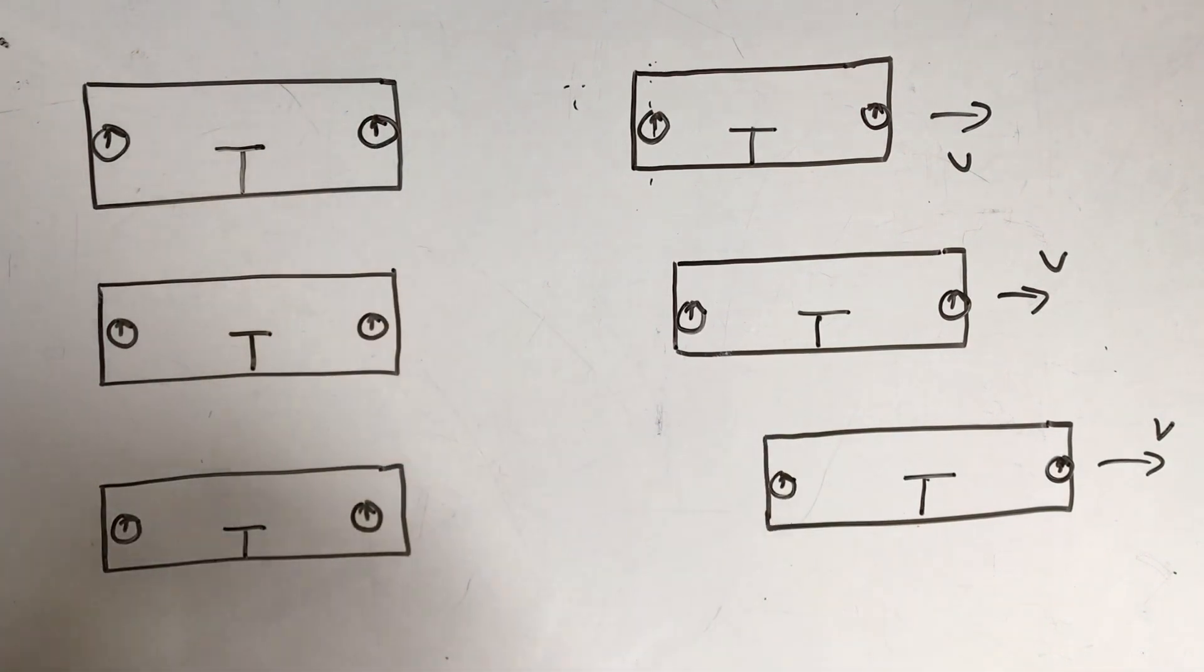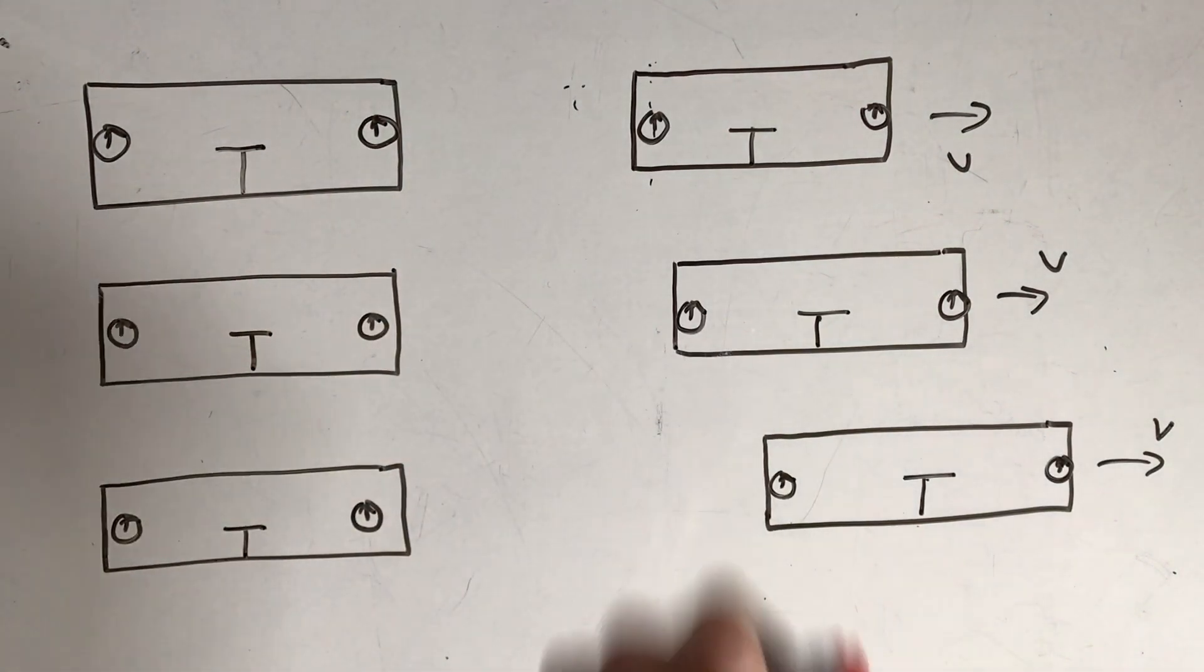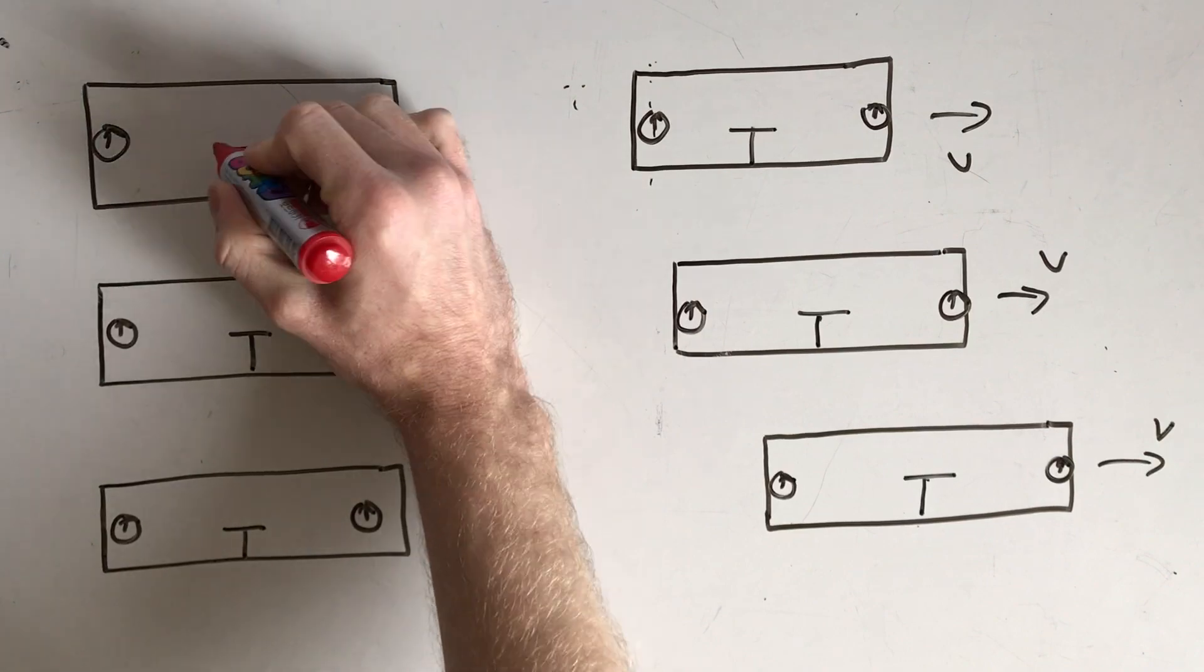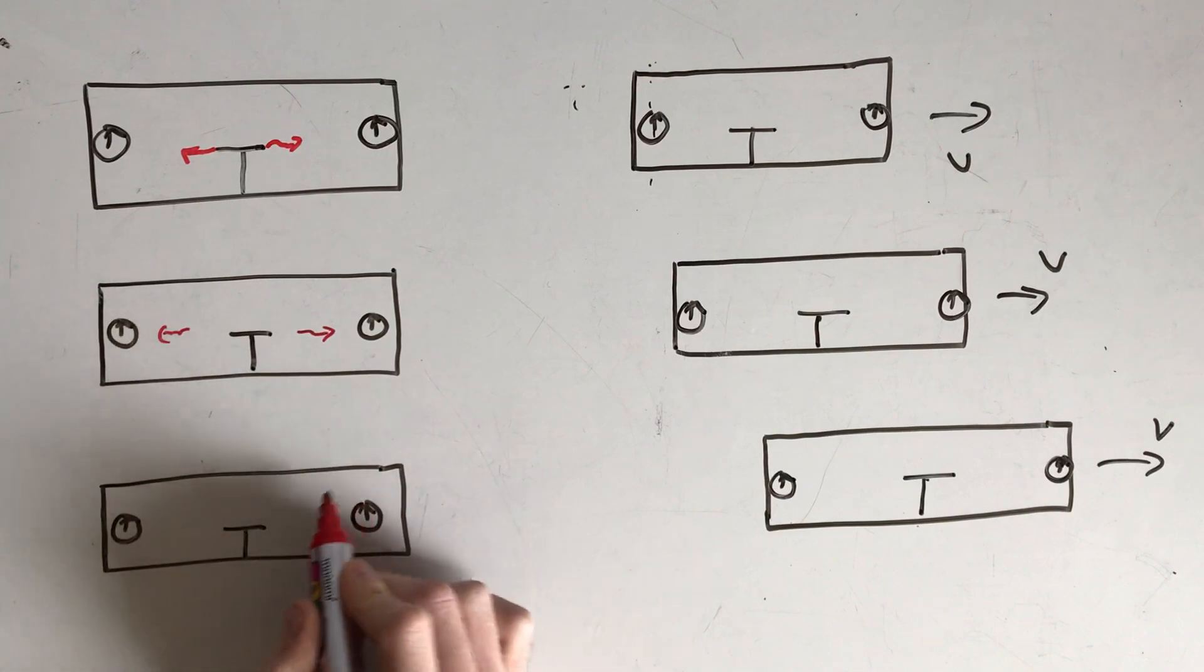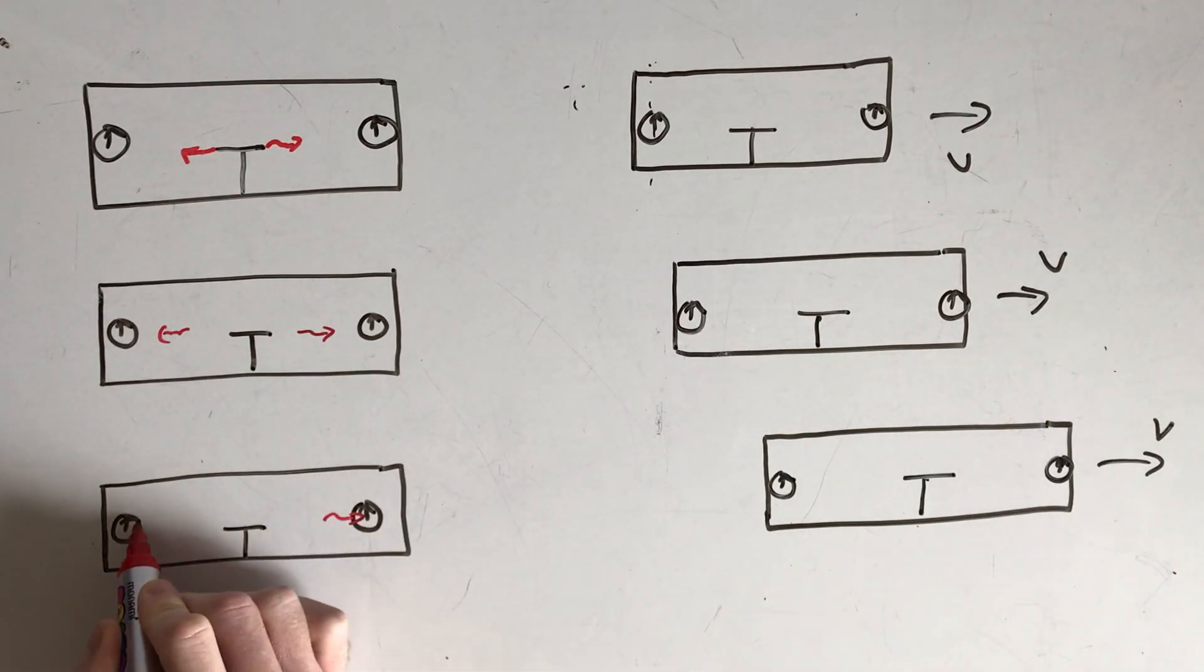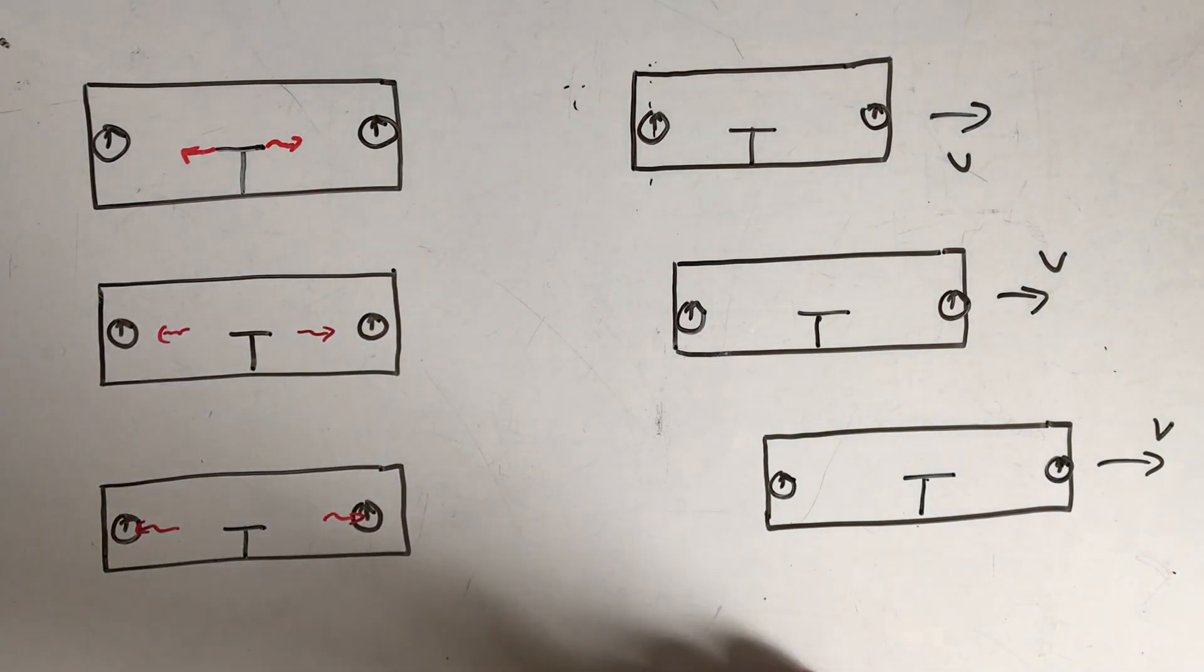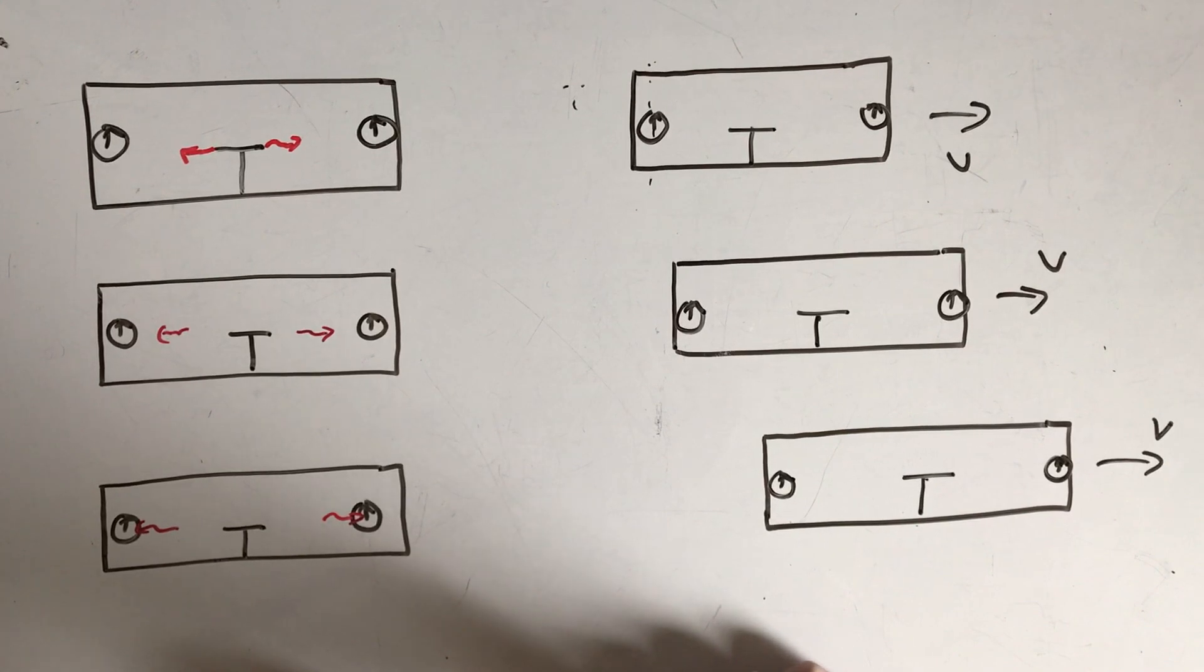So what happens is we send out a light pulse this way, we send out a light pulse that way, the light pulses travel, and they both arrive at the clocks simultaneously. So the clocks start ticking at the same time. Nothing too confusing there.